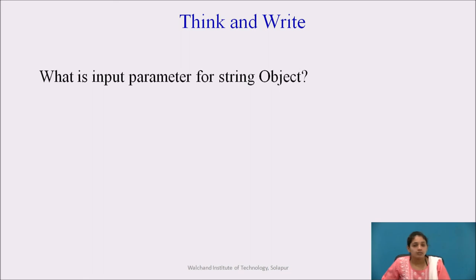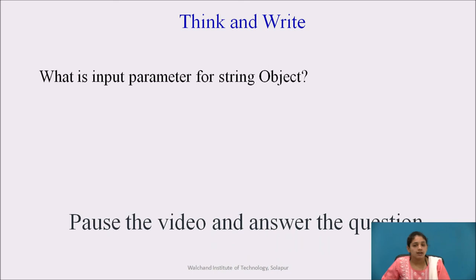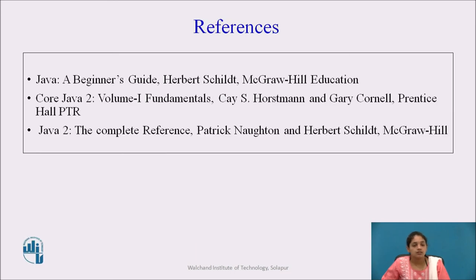Review question: What is the input parameter for a string object? Pause the video and answer. The answer is: String is the input parameter for the string object. References: Java: A Beginner's Guide, Core Java 2 Volume 1 Fundamentals, and Java 2: The Complete Reference.